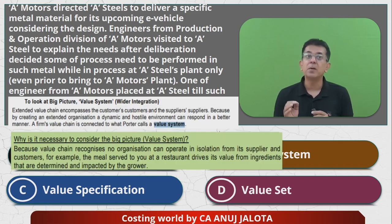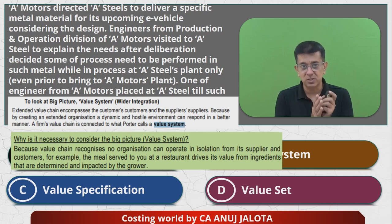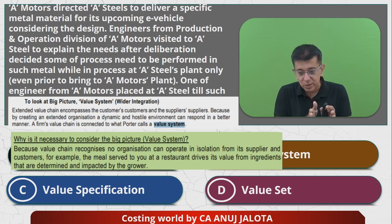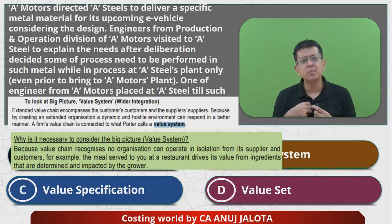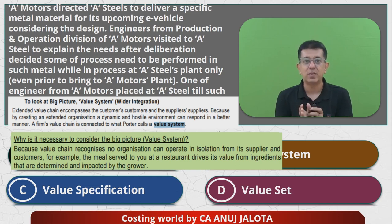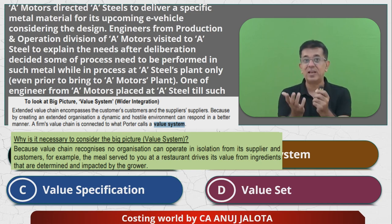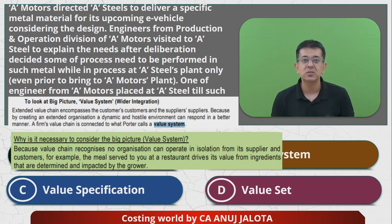To look at a bigger picture: value system means wider integration, meaning combining your value chain with that of the supplier. An extended value chain encompasses customers, suppliers, and customer specifications. Sometimes I also combine my value chain with that of the customer — for example, if distributors need to pack something, that packing can be done by me before I send them the goods, making their work easier. By creating an extended organization, a dynamic and hostile environment can be responded to in a better manner. A firm's value chain is connected to what Porter calls a value system.